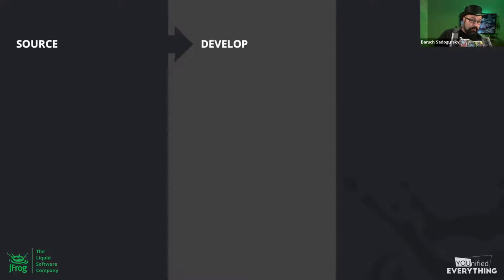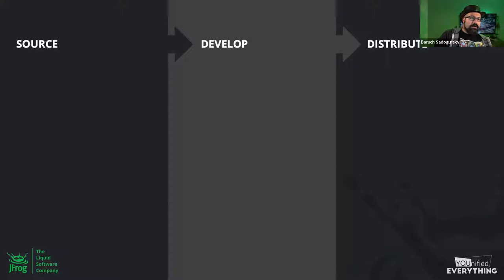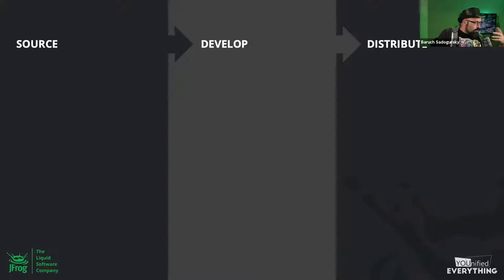It starts with the Docker base image but also all the dependencies of whatever you're using to write your code. The second step is develop — when we write our code, use the sourced components, glue them together, and build with the CI server of our choice. The third part is how we make sure the software gets to the customers and users intended to use it.